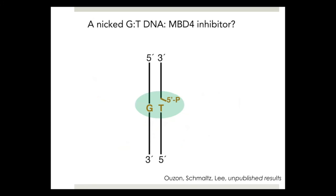So we designed a new nicked GT DNA. In this nicked DNA, we have a GT mismatch but there is a nick, giving us a bifurcated phosphate. Our hope was that this nicked DNA would not be processed by MBD4 but would tightly bind MBD4, so that if we could solve the structure, it might give insight into the role of the arginine finger.